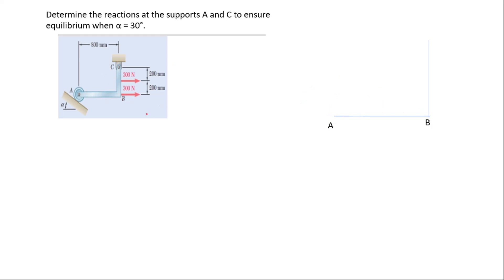We have B and C. As you can see, we have 300 newtons acting at B at a distance of 0.2 meters, and we have another 300 newton force acting on top of B, which has the same distance of 0.2 meters.